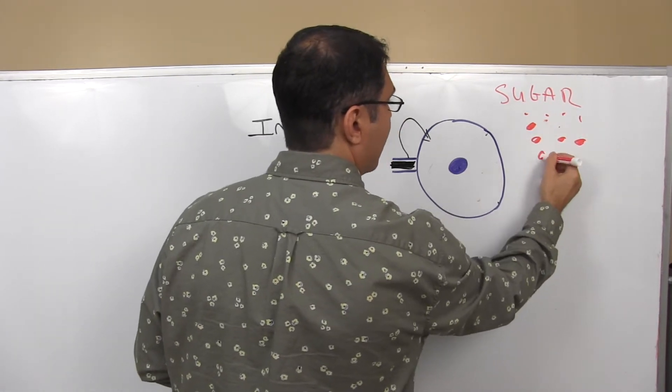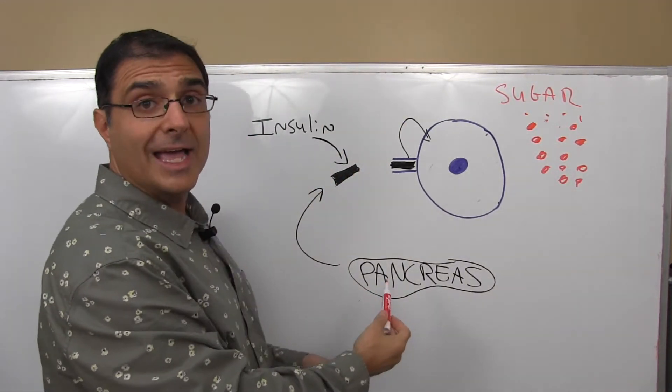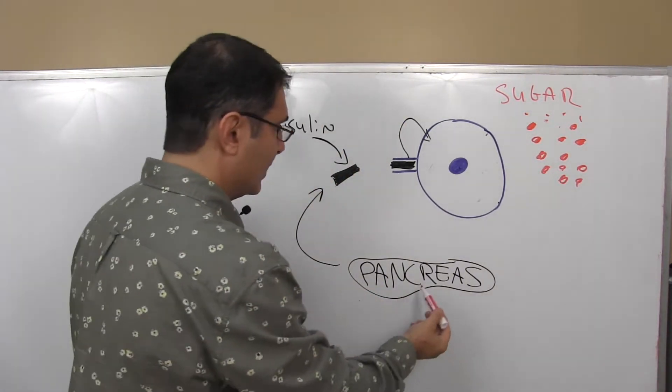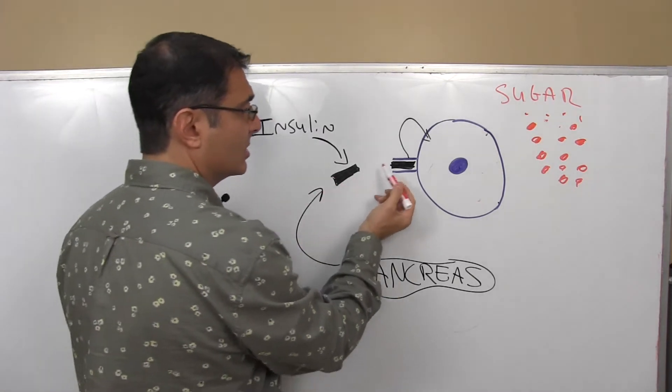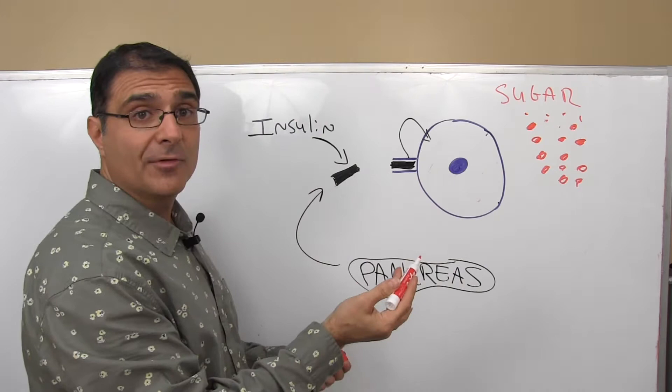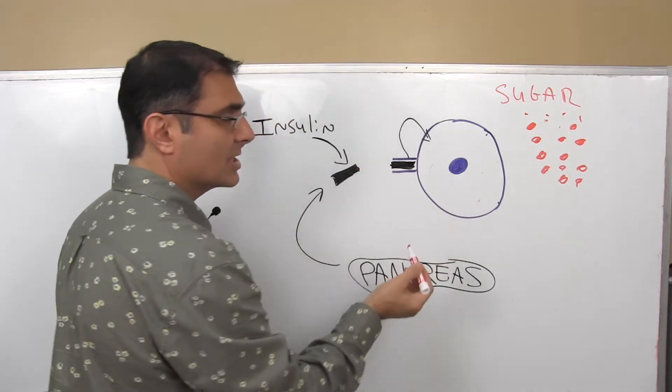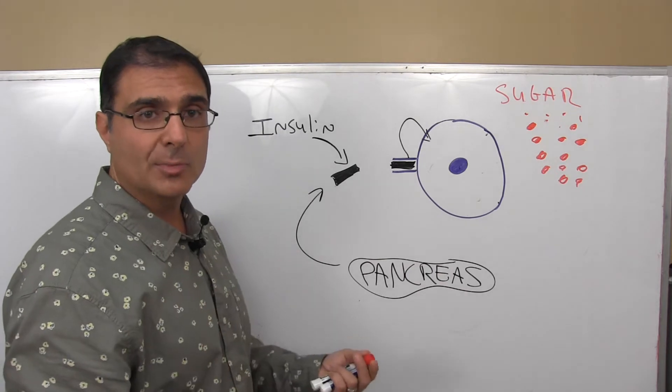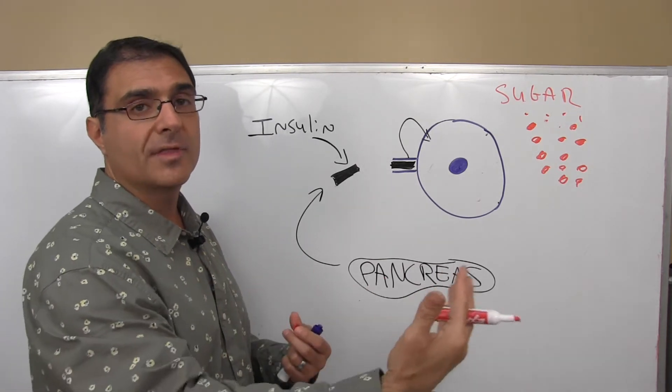And a message goes from the blood to the pancreas, letting it know, hey, blood sugar is elevated. Pancreas sends its hormone insulin out. The insulin plugs into the receptor just like before, and it gives the message to the cell, but the message doesn't get there because the receptor is broken.